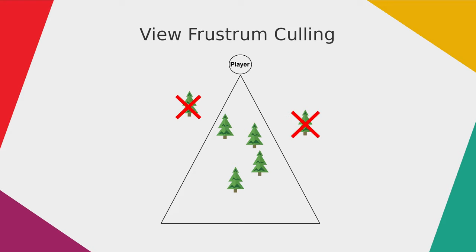Because objects consist of so many polygons, it would come with a very high performance cost to check each polygon if it's inside or outside the view frustum. This is why the algorithm creates a bounding volume around these objects and only checks if the bounding volume is outside or inside the view frustum. Like this it's much easier because it only needs to check the bounding volume and not each polygon inside the object.